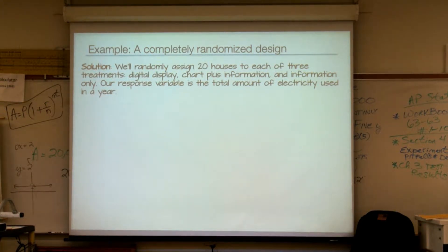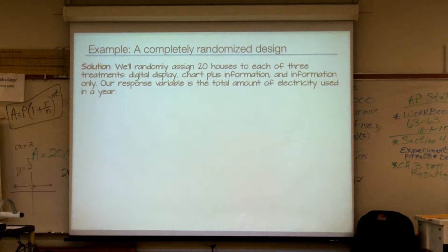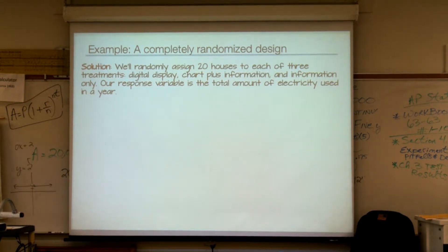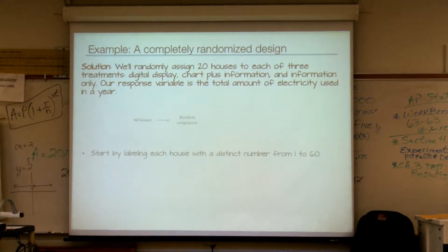We need to randomly assign 20 houses to each of three different treatments. One treatment will be the digital display, one treatment will be using a chart plus the information they receive, and one will be information only. Our response variable is going to be the total amount of electricity used in a year.